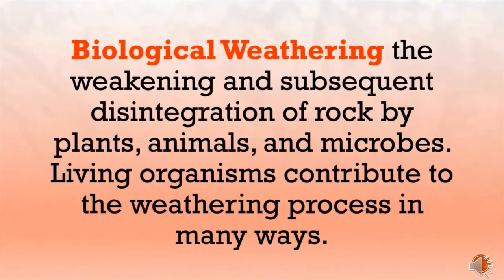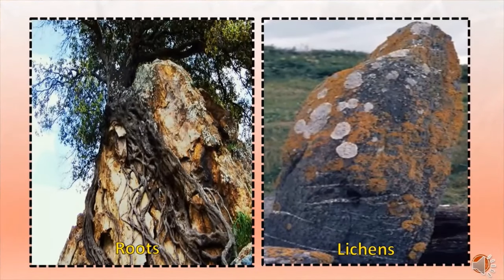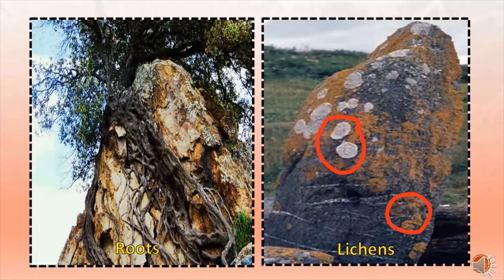Biological weathering is the weakening and subsequent disintegration of rock by plants, animals, and microbes. Living organisms contribute to the weathering process in many ways. For example, tree roots grow through joints or cracks in rock to find moisture, and as the tree grows, the roots gradually prise the rock apart. Even the tiniest bacteria, algae, and lichens produce chemicals that help break down the rock on which they live so they can get the nutrients they need.